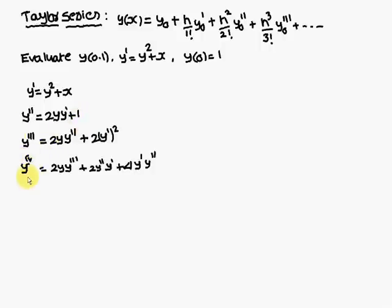For the fourth differentiation, we differentiate y''' = 2y·y'' + 2(y')². Applying the product rule to 2y·y'': keeping 2y fixed, the differentiation of y'' gives y'''; then keeping 2y'' fixed, the differentiation of y gives y'. For 2(y')², using the power rule: 2·2y'·y'' = 4y'·y''. So y'''' = 2y·y''' + 2y''·y' + 4y'·y''.